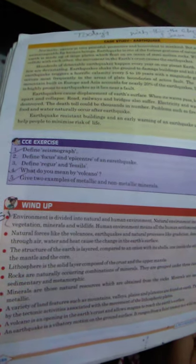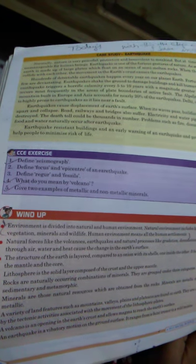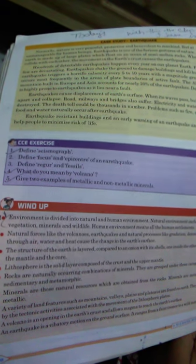Environment is divided into natural and human environment. Natural environment includes land, air, water, vegetation, mineral and wildlife. But human environment means all the human settlement.